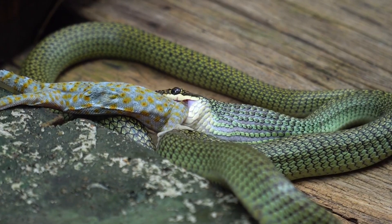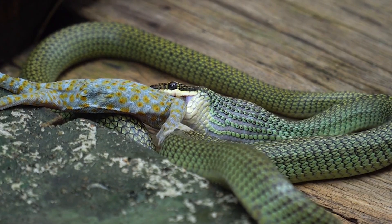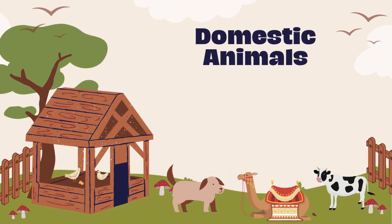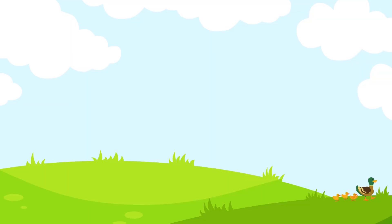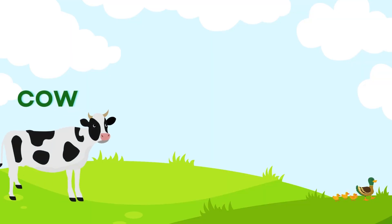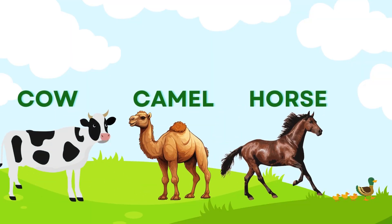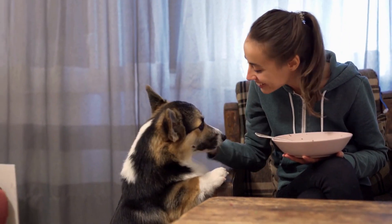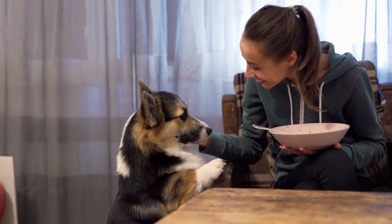Animals like snakes do not chew their food; they swallow the whole animal. Domestic animals. Animals that serve us are called domestic animals. Cow, camel, and horse are some domestic animals. They serve us well if we take proper care of them. They must be served food and water in separate and clean vessels.